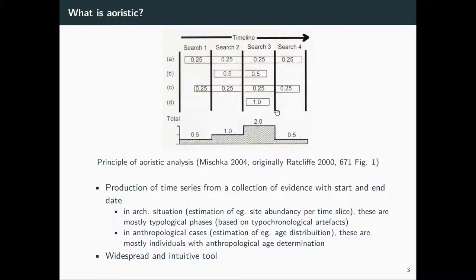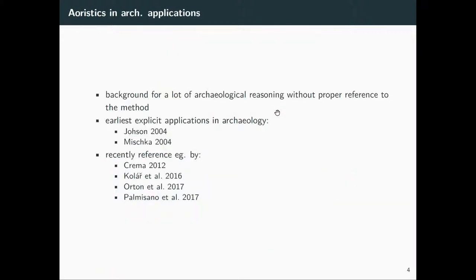With that, you get a probability that you can sum up from multiple sites and get an idea about how many sites were present at a specific time. There's also a use case for this in anthropological cases — for example, estimation of age distributions — although it's not called Aoristic there. It's a widespread intuitive tool, though many people don't realize they are doing this kind of analysis. It was explicitly mentioned in 2004 for archaeological applications by two colleagues, and it's recently referenced by many papers dealing with uncertainty in temporal distribution of sites.